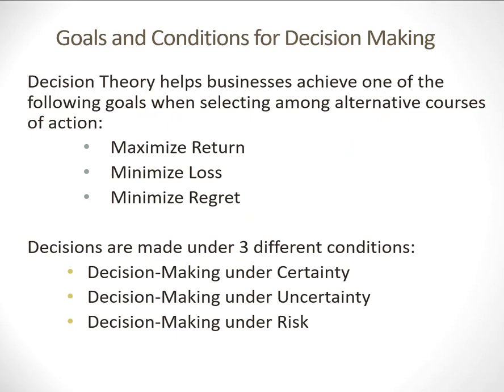What are the goals and conditions for decision making? Decision theory really helps businesses achieve one of three goals. They can maximize their return — make as much money as humanly possible. From a more pessimistic approach, it allows them to minimize their losses — if none of the decision alternatives are wildly profitable, we can use decision theory to minimize their loss. Another goal is minimizing regret — how much am I going to regret having made the wrong decision? We're able to minimize how sorry we are that we made decision A and not decision B.